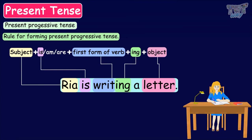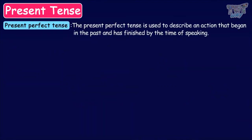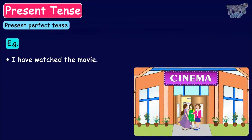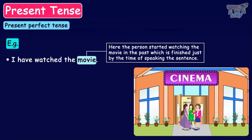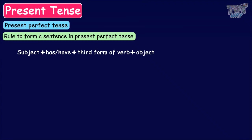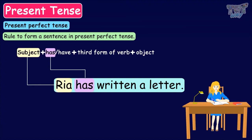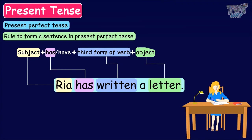Now let's revise present perfect tense. Present perfect tense is used to describe an action that began in the past and has finished by the time of speaking. For example, 'I have watched the movie' — the person started watching in the past and finished just by the time of speaking. The rule is: subject plus has or have plus third form of the verb plus object. 'Rhea has written a letter.' Rhea is the subject, has is the helping verb, written is the third form of the verb, and letter is the object.